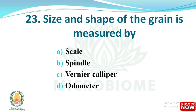Next question: size and shape of a grain is measured by which of the following instruments? The options are scale, spindle, vernier caliper, and odometer. The right answer is option C: vernier caliper.